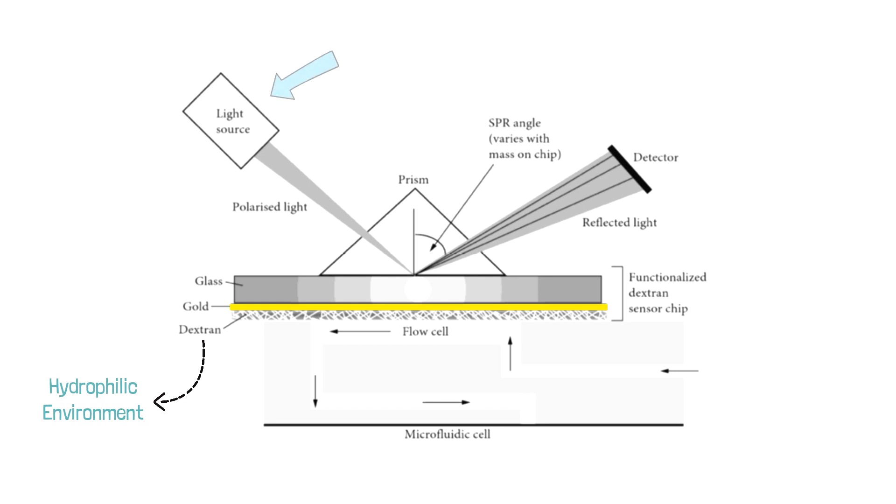As you can see, there is a wedge-shaped beam of polarized light that is focused through a prism onto the sensor chip. The reflected light or SPR response is monitored by the detector and the angle at which the minimum light reflection